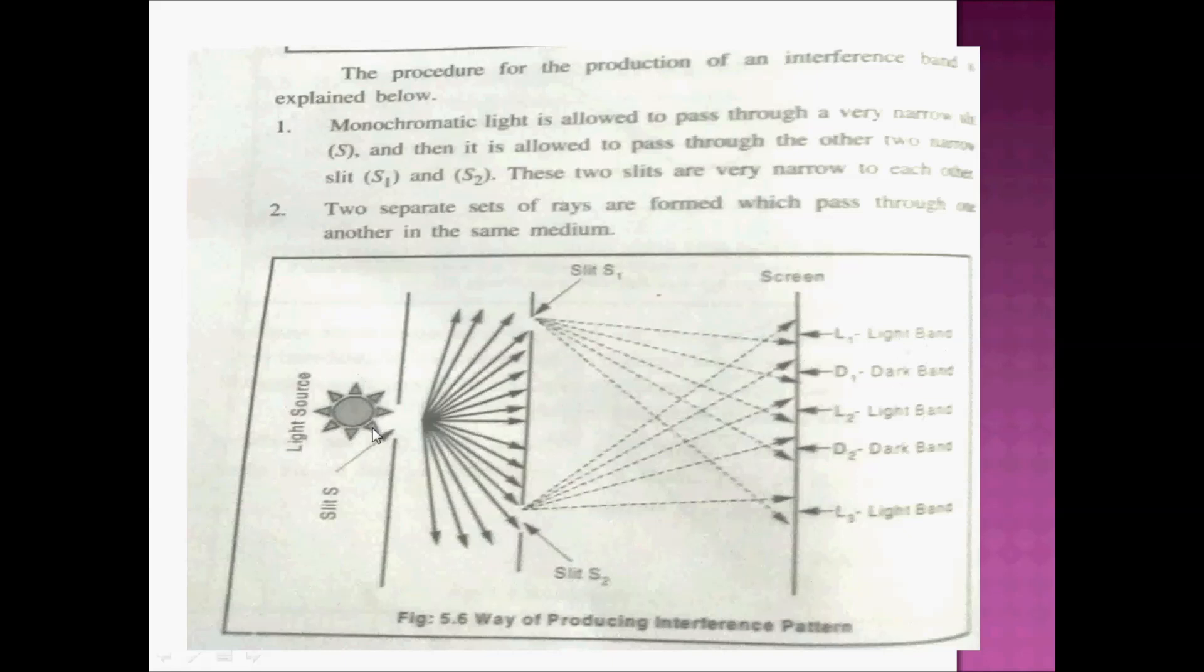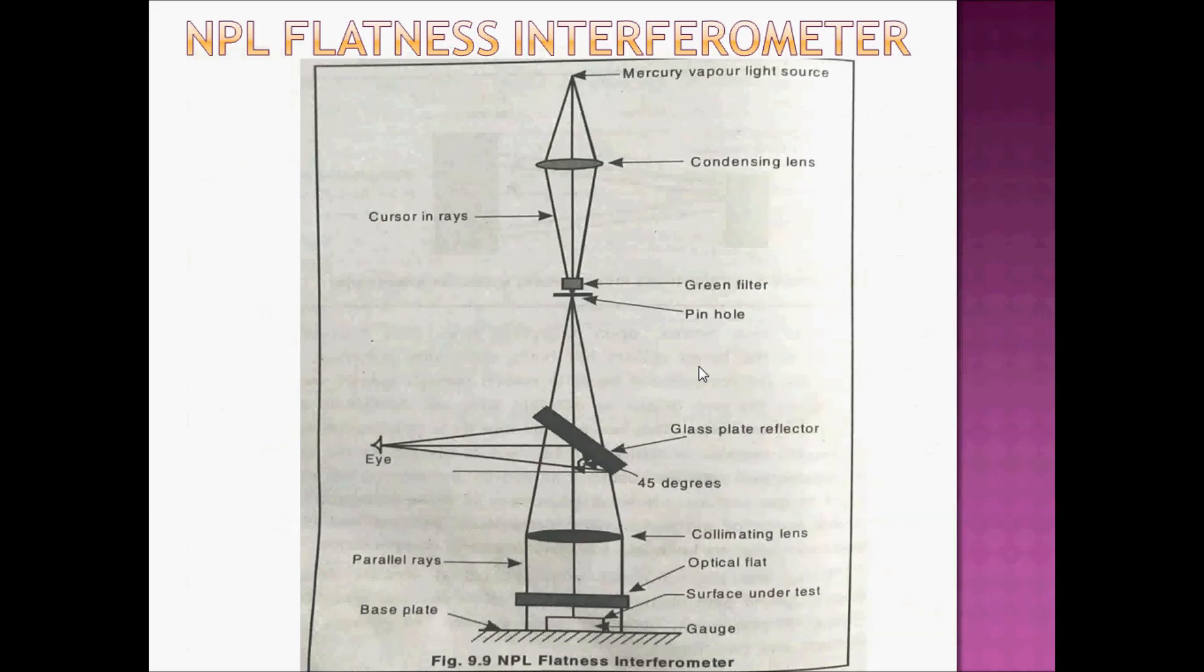There is a light source, first the slits will be selected. The separation is S1 and S2, selected in the final screen. S1 is L1 and S2 is L2. This is nearly the same, meaning two light bands and D1, D2 dark bands will be formed. This is the basic details you can follow in the text.